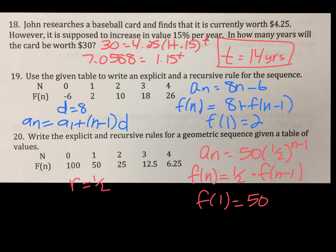18 is another one just like we did a second ago. It's growth again because it gave you a percentage going up. Final amount, initial amount. Divide to get that. Do natural log both sides and divide. Get 14 years.